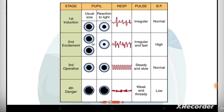Next is respiration. In stage one, there is irregular respiration. In stage two, there is also irregular respiration. In stage three, there is deep breathing. In stage four, there is shallow breathing — this happens when the person goes into overdose. At that point, BP becomes low and respiration decreases. Stage four is also called the stage of danger. For the pulse: in stage one it is irregular, in stage two it is irregular and fast, in stage three it is steady and slow, and in stage four it is weak and thready.